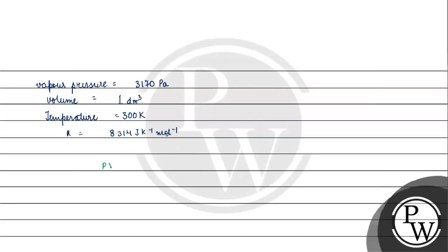Using PV = nRT, we solve for n. Pressure is 3170 Pascal. Volume — we convert 1 decimeter cube to meter cube terms: 1 dm³ equals 10 to the power minus 3 meter cube.